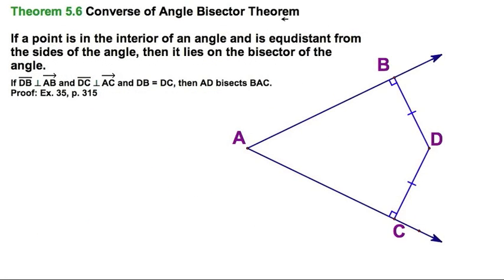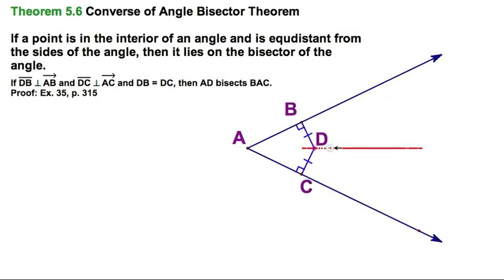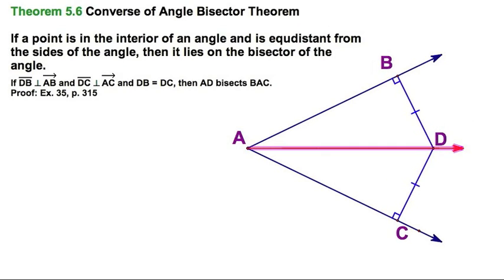Let's look at the converse of the angle bisector theorem. Starting with this random angle A, I've got point D which is equidistant from the two rays AB and AC. Equidistant means these two blue segments — the perpendicular distance to those rays — are both congruent. I could move point D to many different positions, and what I'm generating by moving it around looks like a ray.